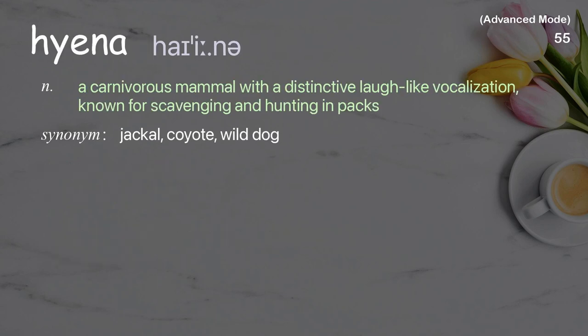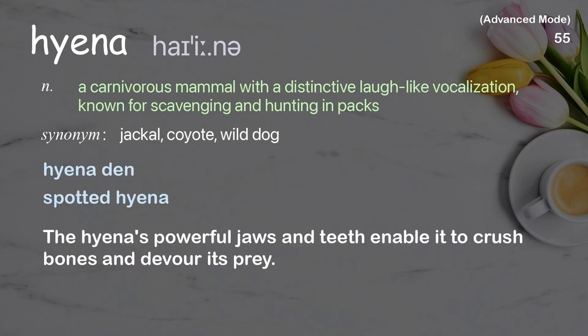Hyena: A carnivorous mammal with a distinctive laugh-like vocalization, known for scavenging and hunting in packs. Examples: hyena den, spotted hyena. The hyena's powerful jaws and teeth enable it to crush bones and devour its prey.